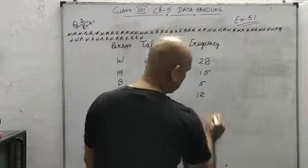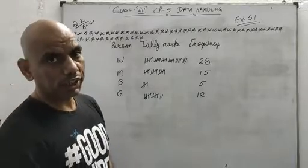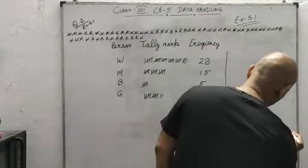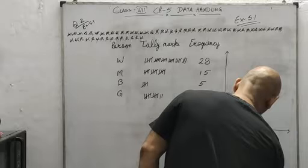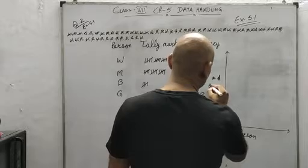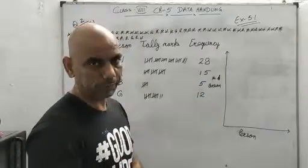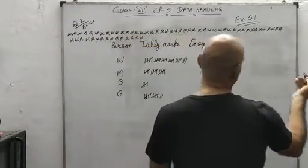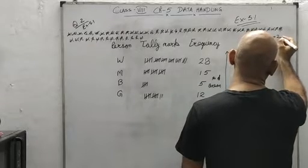This is the information we gathered from this data, and now we are going to convert it into a bar graph. On the x-axis I will represent the person, and on the y-axis I will represent the number of persons. The maximum number is 28, so I can keep a scale of 1 centimeter equals 2 persons.